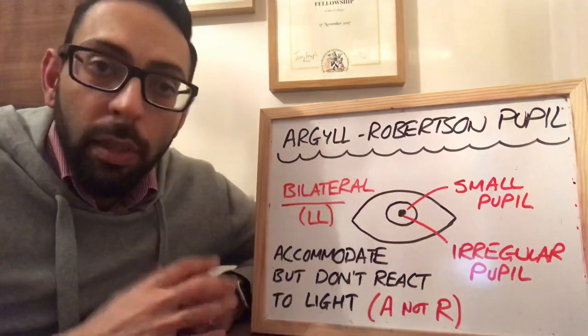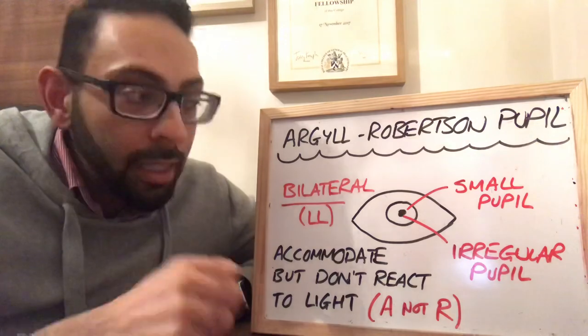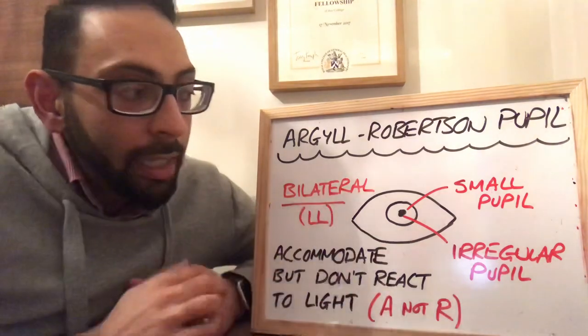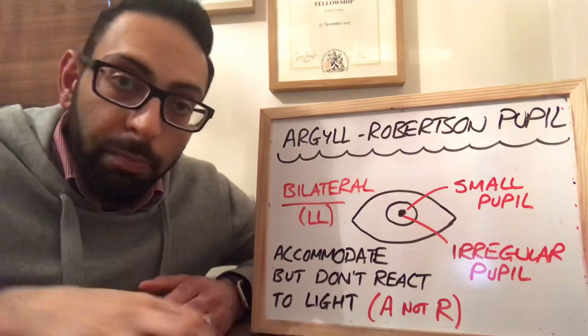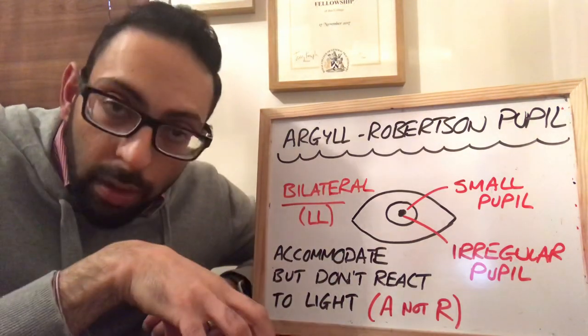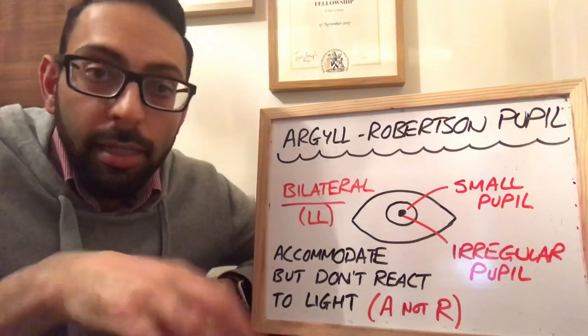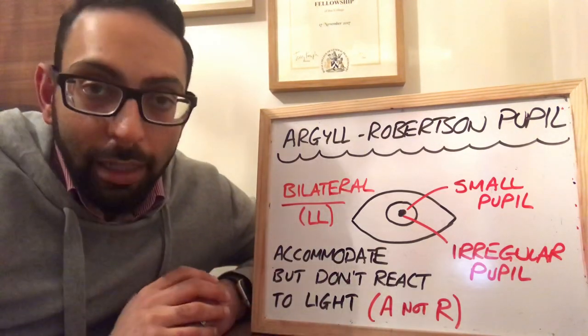The pupil is usually very small — so miosis — and it's also irregular as well. So both sides are small and both sides are irregular.